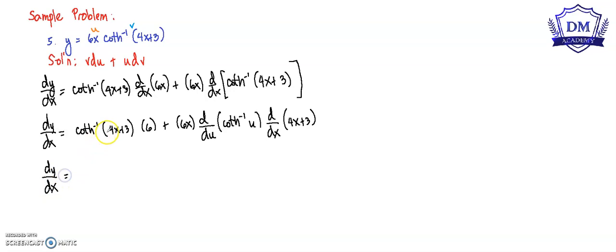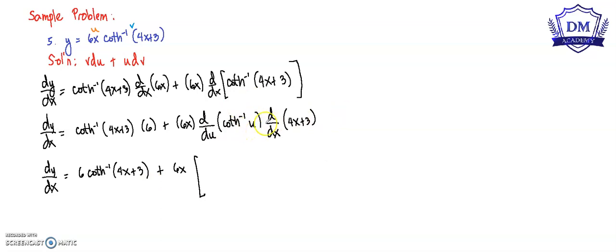So we have 6 times inverse hyperbolic tangent of 4x plus 3, plus 6x multiplied by the derivative of inverse hyperbolic tangent of u, which is 1 all over 1 minus u squared, then multiplied by the derivative of 4x plus 3, which is 4.